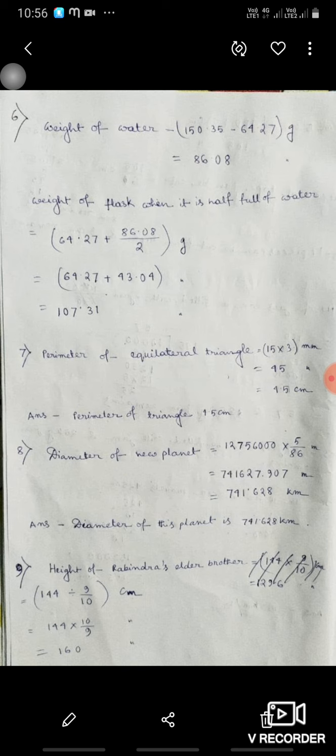Height of Rabin's elder brother. 144 divided by 9 by 10 means 144 into 10 by 9, that is 160 centimeter.